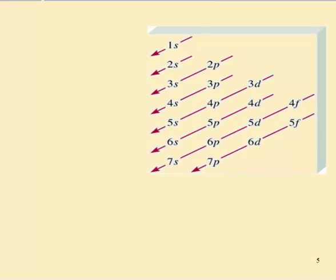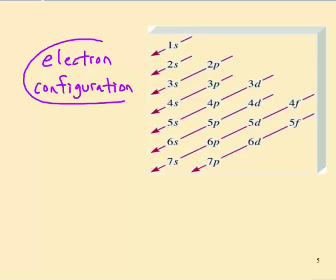The purpose here is to write what is called an electron configuration. Like the name suggests, it is the configuration of the electrons, where the electrons are located in relationship to the nucleus. The nucleus is in the center.